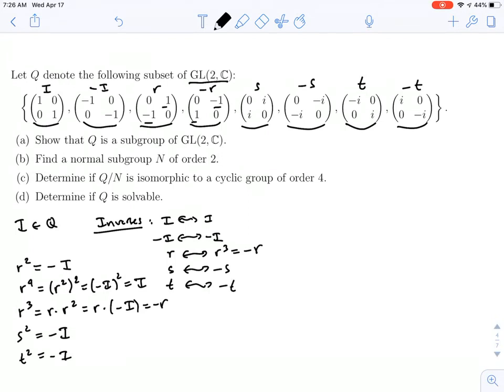So we have eight elements. They all have inverses in the set. So we're closed under inverses. Now let's check products.